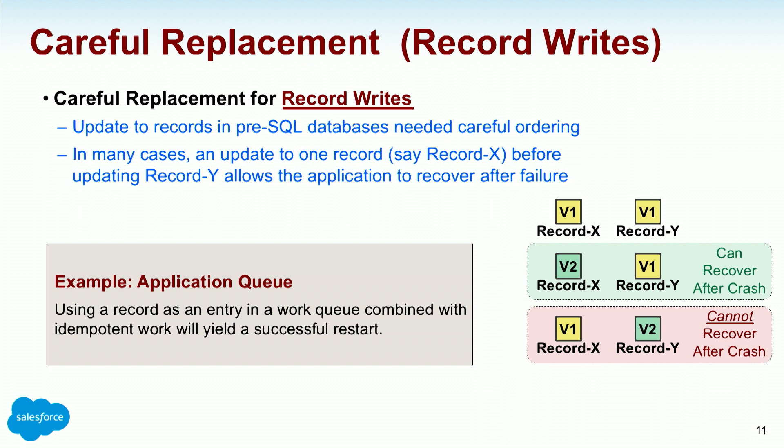A great example is an application queue. If I write a record in the queue saying I'm going to do this stuff to the database, then commit, then read that and do the stuff to the database in a fashion where if I crash partway I can restart it — that gets me out of this. It's careful replacement at the granularity of records in the system. It's a way of walking your way forward and knowing how you stand and can recover.